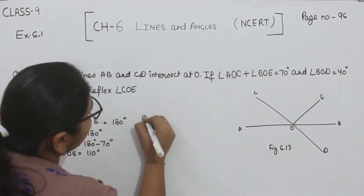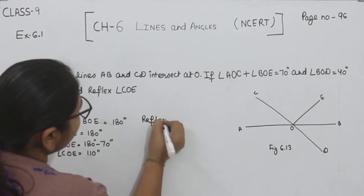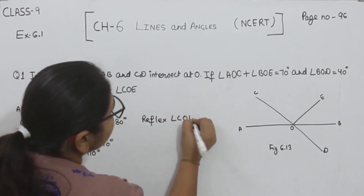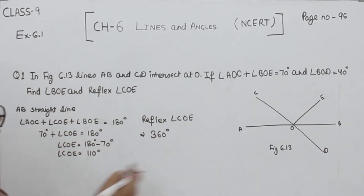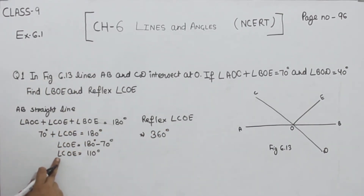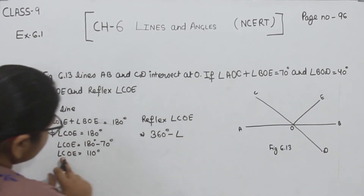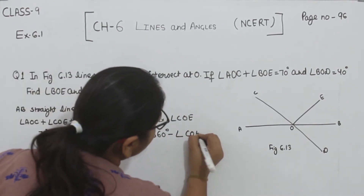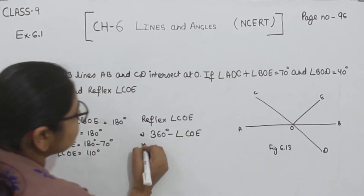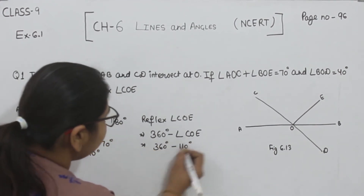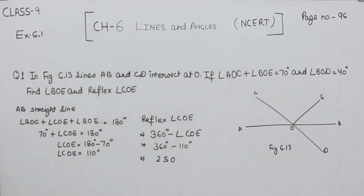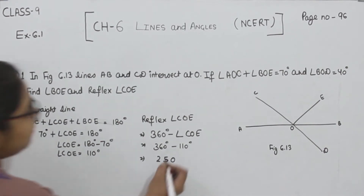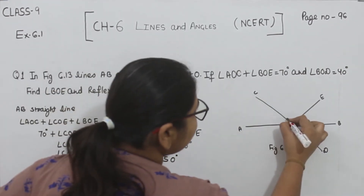Now we have to find the reflex of angle COE. The reflex angle is 360°. We subtract angle COE from 360°: 360 minus 110 gives us 250°. So the reflex angle of COE is 250°.